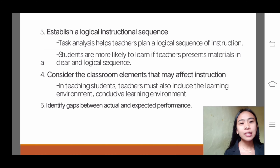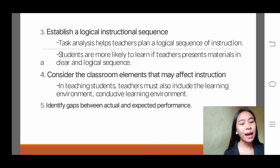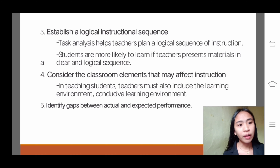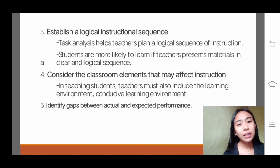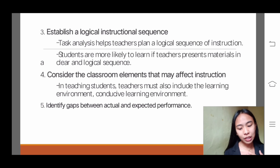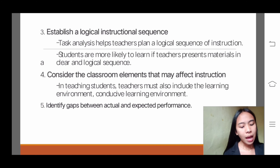Number four: consider the classroom elements that may affect the instruction. Teachers must include the learning environment — a conducive learning environment. For example, knowing that a lesson requires special treatment, such as in science subjects where you need to experiment, means the convenient place is the laboratory. Number five: identify the gaps between actual and expected performance. Teachers must identify their expectations and students' expected performance, and by recognizing the difference between actual and expected performance, teachers are able to keep instructional goals and objectives realistic — neither too low nor too high.